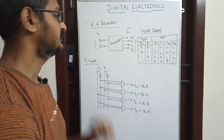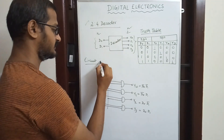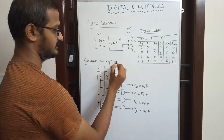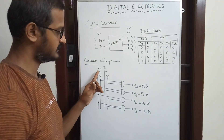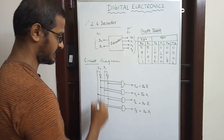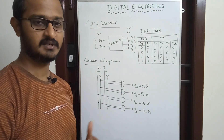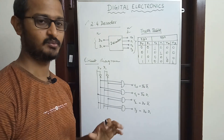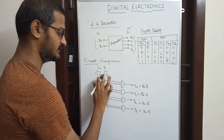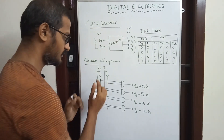This is the concept of the 2-to-4 decoder. Now let's look at the circuit diagram. These are the inputs. This is the active high line and this is the active low line — so this represents high and low, meaning 1 and 0. This is an example showing the output 0.